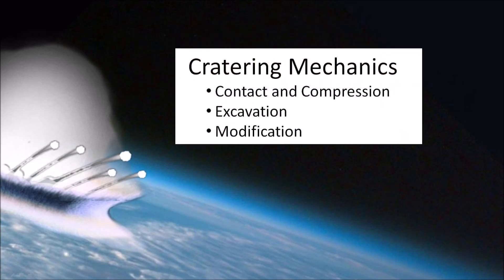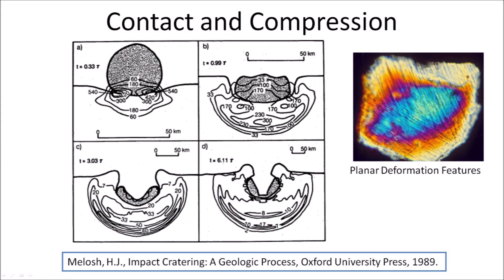Scientists who study impact cratering usually identify three mechanisms that occur when a projectile hits a target: contact and compression, excavation, and modification. The contact and compression stage of an extraterrestrial impact lasts less than one second. The swiftly moving projectile pushes target material out of its path, compressing it and accelerating it to high velocity. Most of the projectile's initial kinetic energy is transferred to the target in a volume not much larger than the projectile itself.